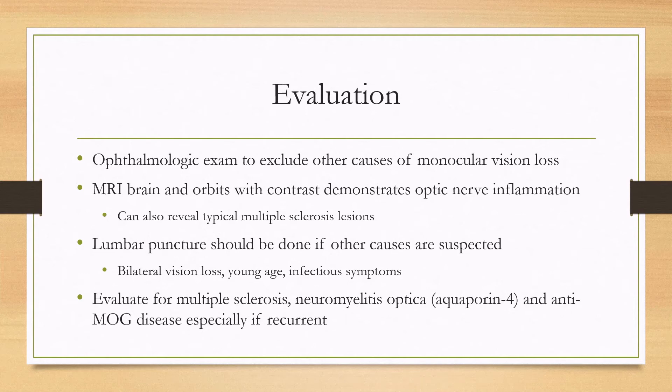A lumbar puncture can be done if other causes are suspected; however, for classic optic neuritis it does not always have to be done. Reasons to perform one include bilateral vision loss, young age of onset, or infectious symptoms. For anyone with optic neuritis, evaluate for multiple sclerosis, and if not present — especially with recurrent disease — test for neuromyelitis optica with the aquaporin-4 antibody and anti-MOG disease as well.